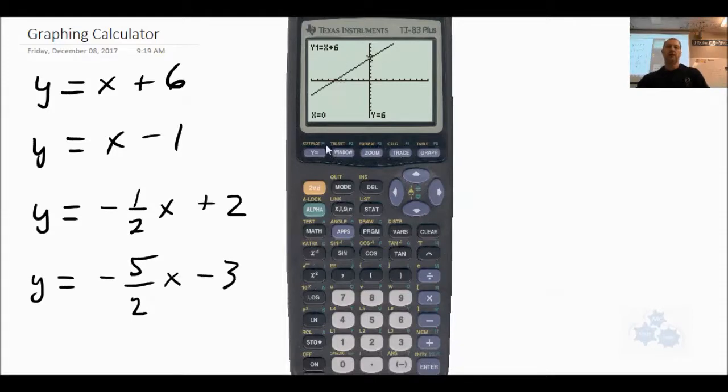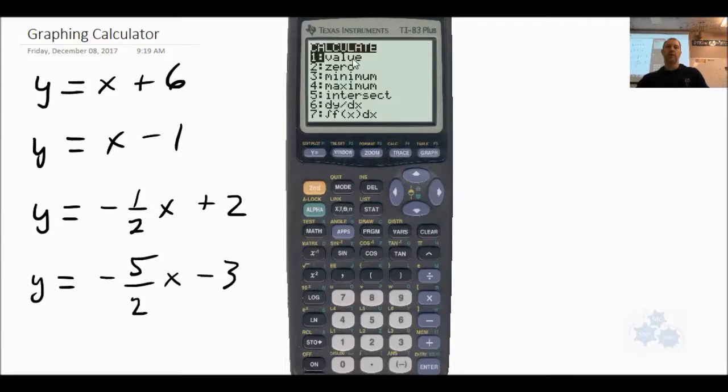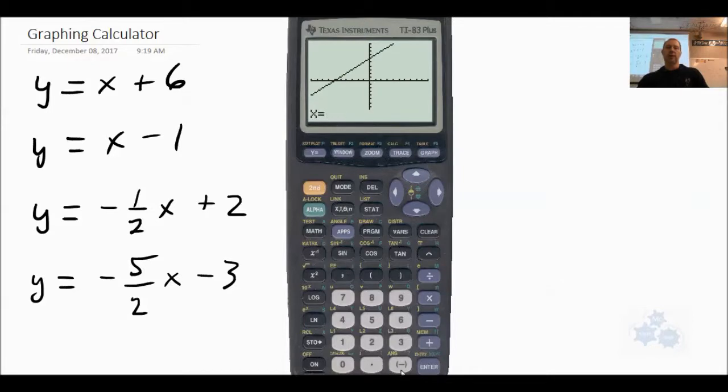Now let's check this one. Let's go second function trace to the calculate screen. Let's do, you can hit number one or just enter because it's on that one. Let's try negative. Remember, this is your negative button. Let's try negative six and see what we get. Oh, look at that. It is exactly negative six, zero.